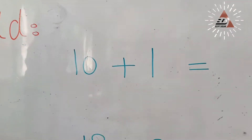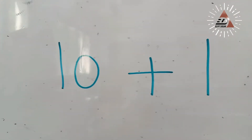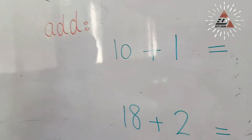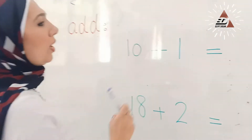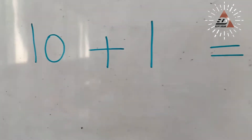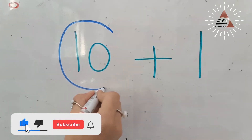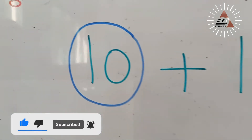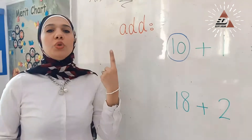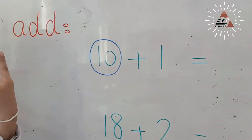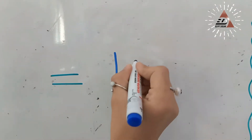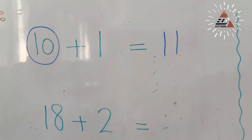What is this number? 10 plus. What is this number? 1. Which one is the bigger number, 10 or 1? Yes, 10 is the bigger number. Now, we are going to circle number 10, and put the smaller number on your hand. Count after the bigger number. After 10: 11. Write number 11 after the equal sign.